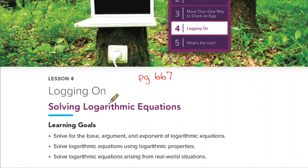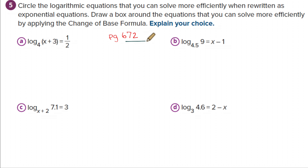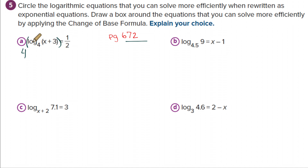We're now into lesson four — we're going to learn different ways to solve logarithmic equations, though we've already seen some. We're going to page 672 and start solving equations for more practice. There are different ways to do these and no one way is necessarily better. For the first one — log base 4 of x plus 3 equals one half — one way to get rid of that log is to raise 4 to this power, because this is the exponent that when applied to 4 gives x plus 3.